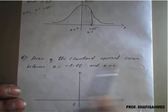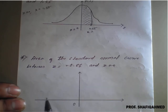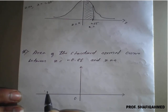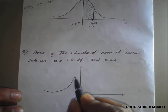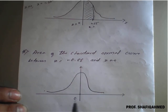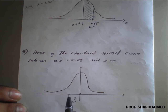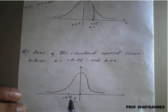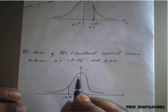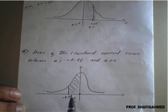Similarly, find the area of the standard normal curve between z equal to minus 0.86 and z equal to 0. I will draw a normal distribution curve. z equal to 0 comes exactly at the center. z equal to minus 0.86 is on the left side. We draw a perpendicular vertical line at minus 0.86 and shade the area from 0 to minus 0.86.